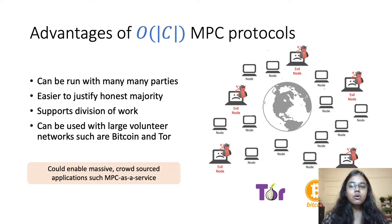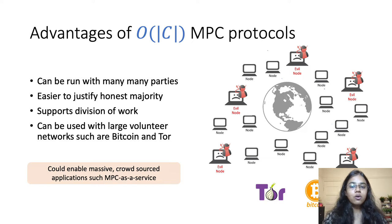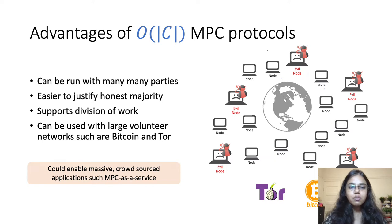Finally, such protocols can also be used with large-scale volunteer networks that have recently emerged, such as Bitcoin and Tor. These networks are already used to performing incredibly large distributed computations, and it would be interesting to use them for MPC computations as well. This would enable a crowdsourced application like MPC as a service that still respects privacy, and such services can be used by clients to delegate large computations.